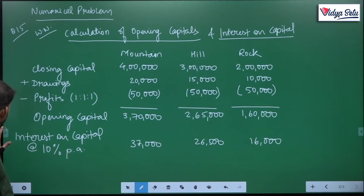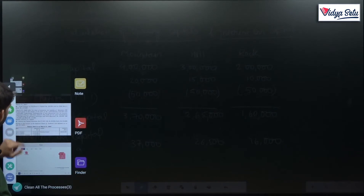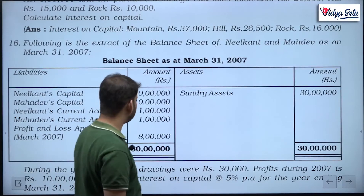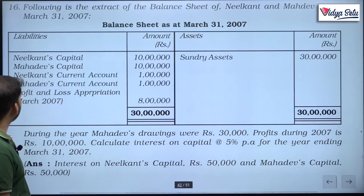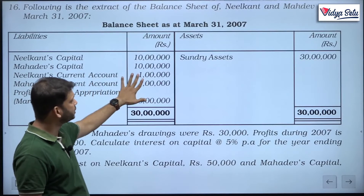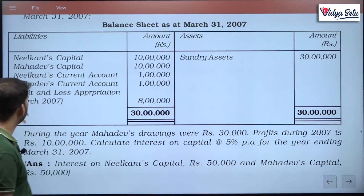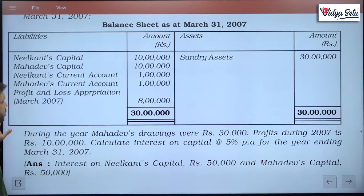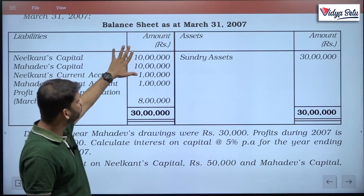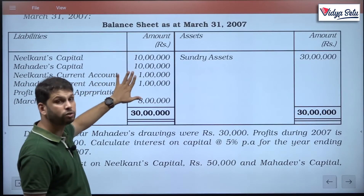Now let us look at question number 16. The following is the extract of the balance sheet of Nilkant and Mahadev as on March 31, 2007. On the asset side they have 30 lakh rupees sundry assets. On the liability side: Nilkant's capital, Mahadev's capital, Nilkant's current account, Mahadev's current account — given on the liability side meaning they have a credit balance — and profit and loss appropriation balance of 8 lakh, meaning it is still undistributed.